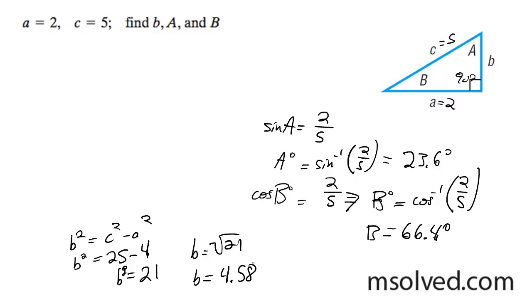Now I have all my angles and sides. Angle A is 23.6 degrees, angle B is 66.4 degrees, and side b is 4.58. That's it.